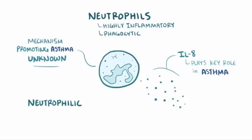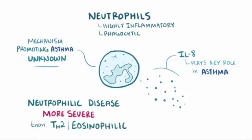Patients with a neutrophilic disease tend to have a more severe form of asthma than patients with TH2 eosinophilic asthma.